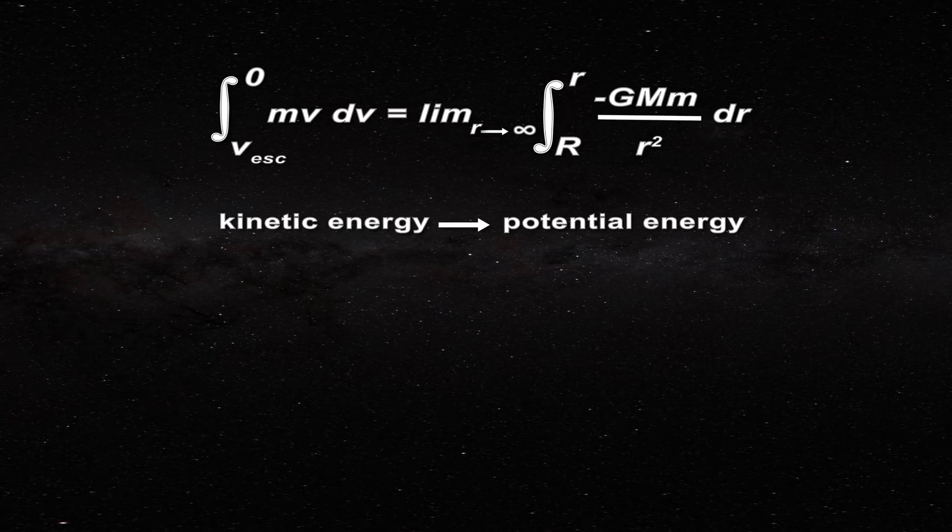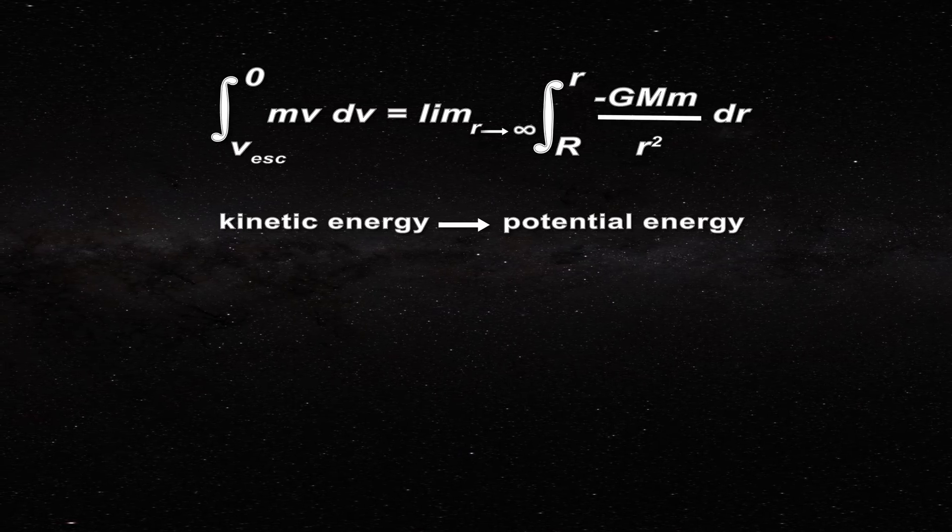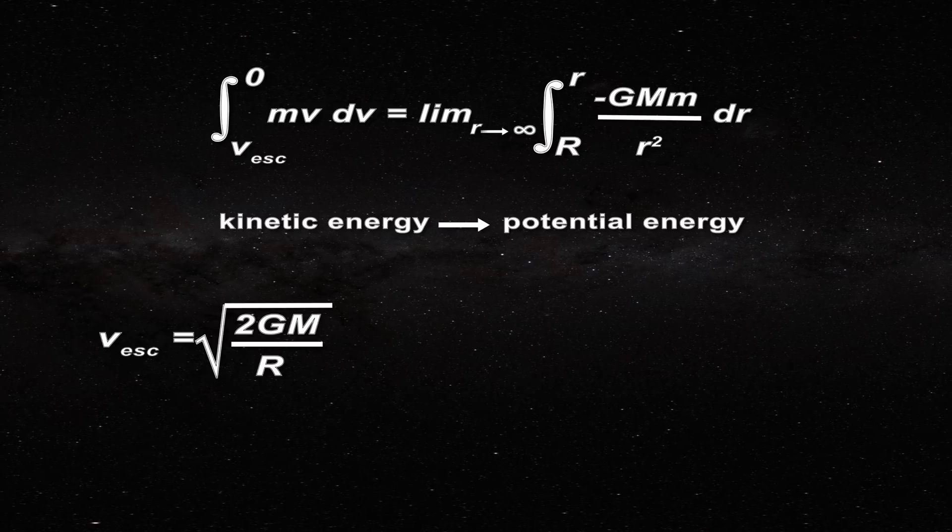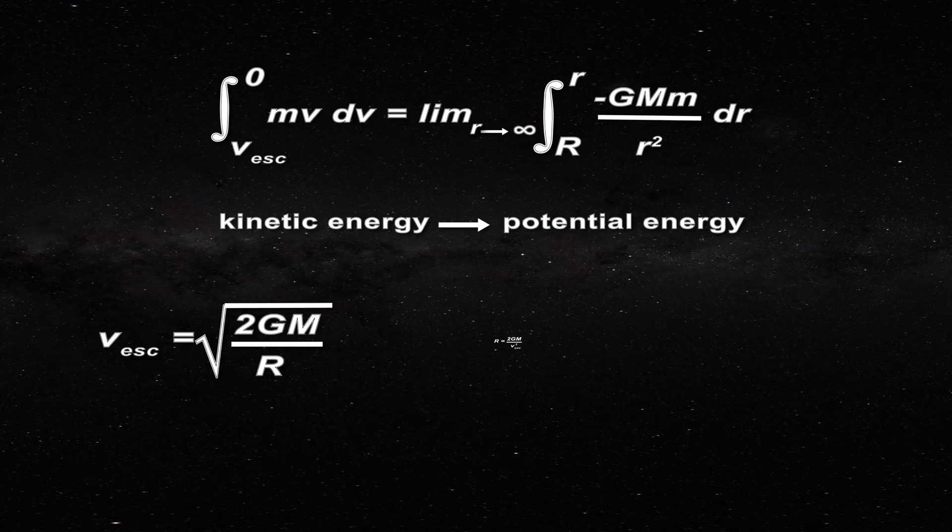Mathematically, this is stated by Newton's theory in this relation. Evaluating these integrals, we find the escape velocity from the body of mass big M is given by this equation, where big R is the radius of the mass big M and G is Newton's universal gravitational constant. Solving this equation for big R gives the following.